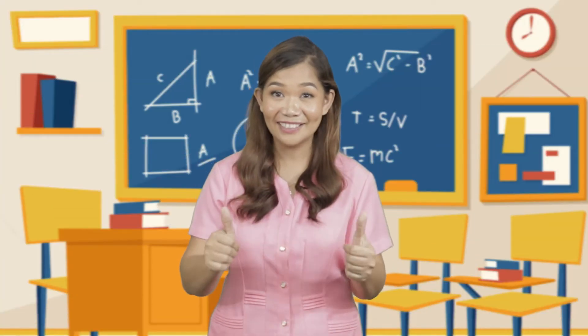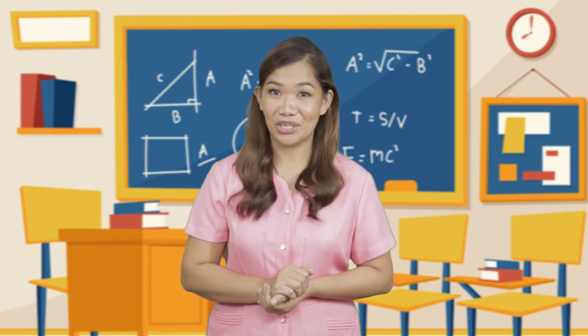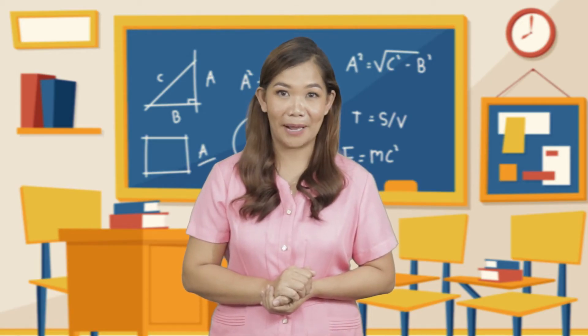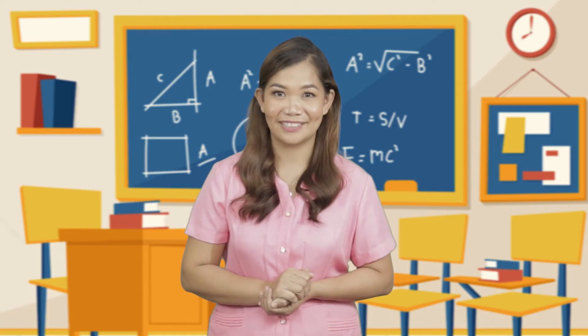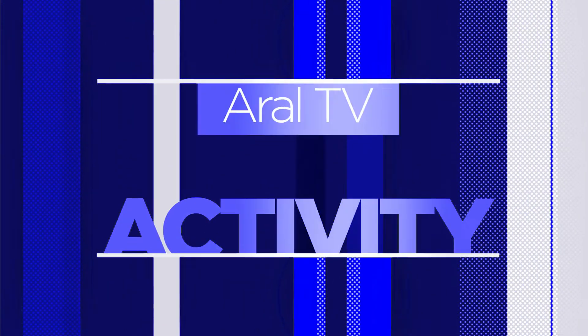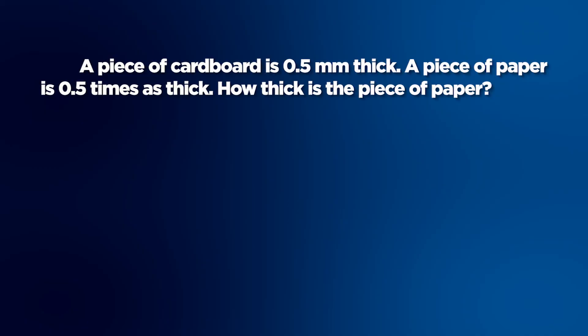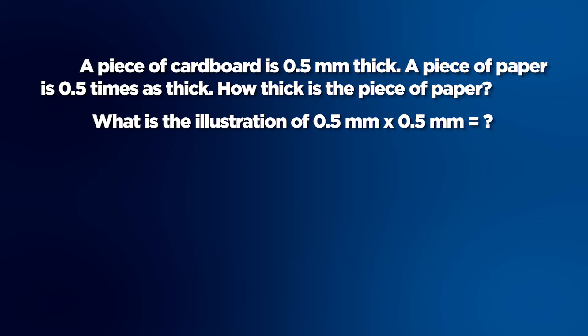It's so easy, right? Let's try another! Get your notebook and paper. Answer the problem using pictorial models. A piece of cardboard is 0.5 mm thick. A piece of paper is 0.5 times as thick. How thick is the piece of paper? What is the illustration of 0.5 mm x 0.5 mm? You will be given 20 seconds to answer. Timer starts now!